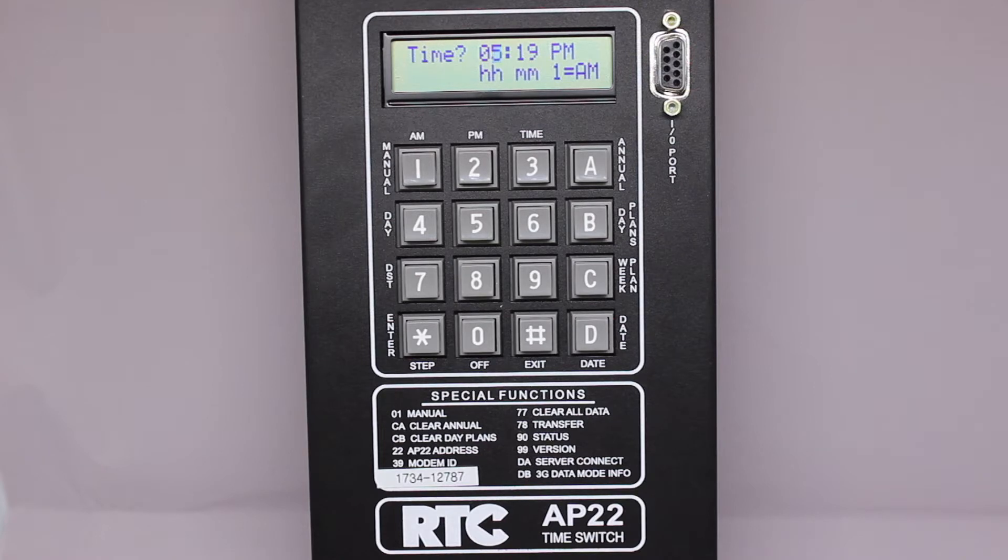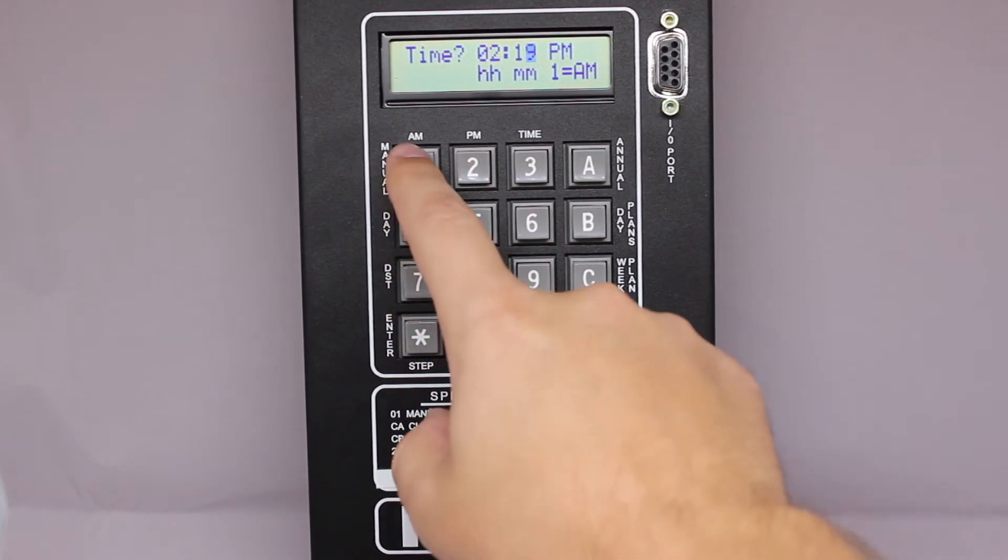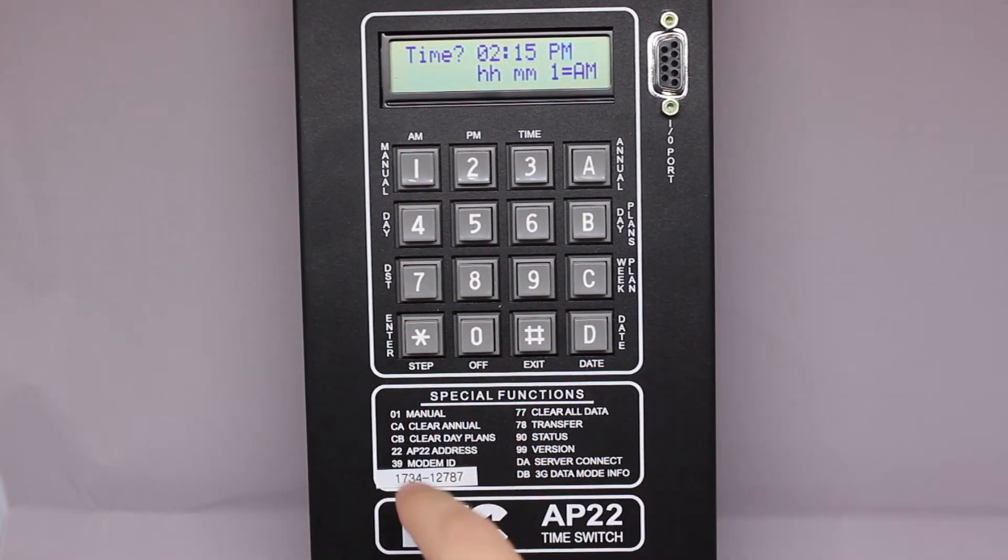So to set the time to 2:15 PM, I'm going to press 02 star, 15 star, and then the number 2 will serve for PM.